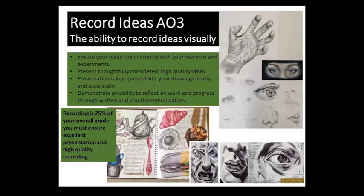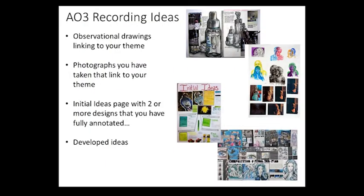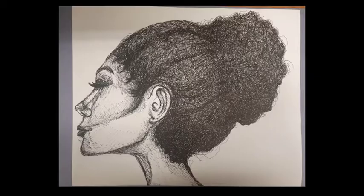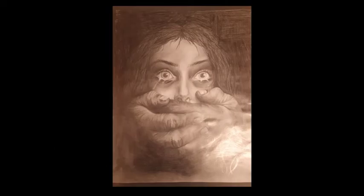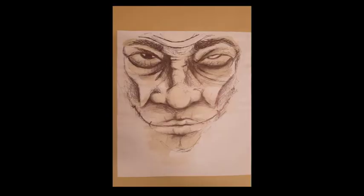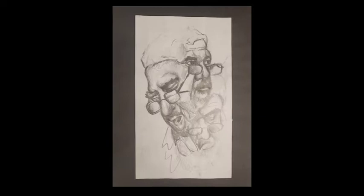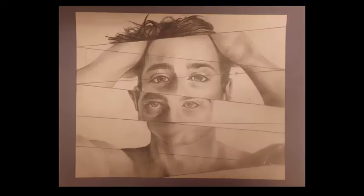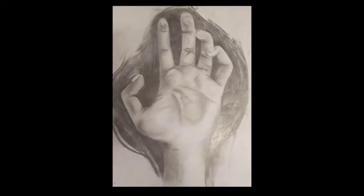Assessment objective 3 is all about recording ideas, observations and insights relevant to intentions as work progresses. You will do lots of drawing, which could be in the form of painting, collage or any kind of recording. You will also take photographs and develop initial ideas that will build and lead on to more developed ideas.